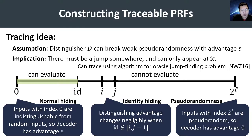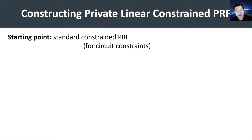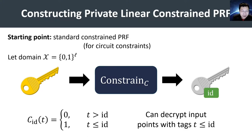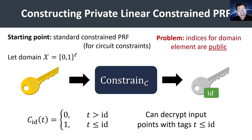All that remains to construct a traceable PRF is to build a private linear constrained PRF. Our starting point is a standard constrained PRF for general circuit constraints over an L-bit string domain. If we only want to support linear constraints, we can encode the linear constraint as a circuit functionality. However, the problem is that the indices for domain elements would be the domain values themselves and thus completely public, whereas in a private linear constrained PRF, the index associated with a domain element must be hidden, in order to have properties like index hiding.